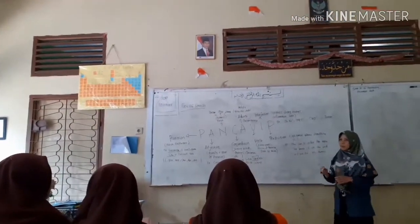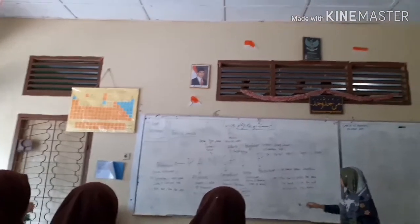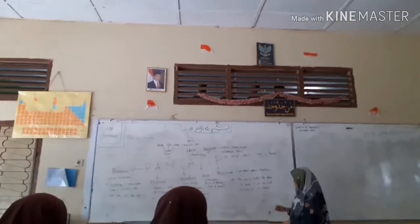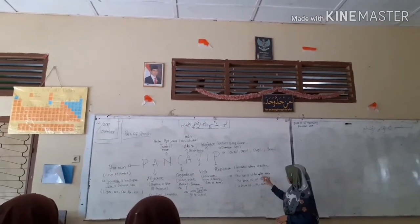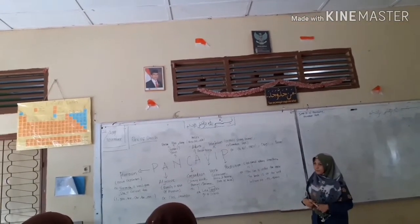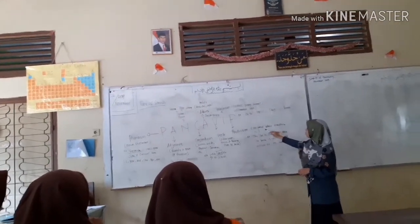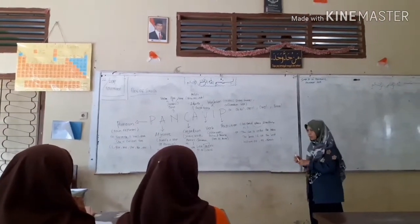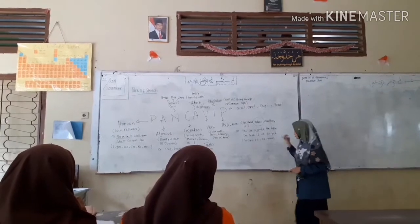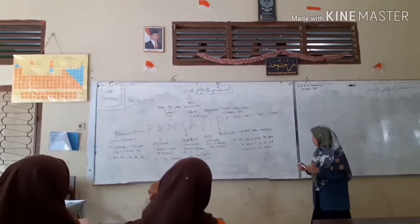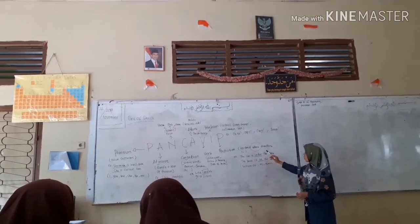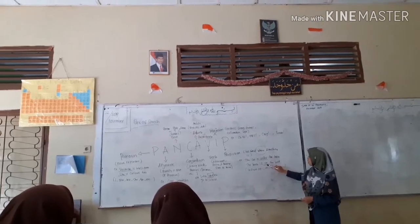Next, preposition. Preposition tells about where something is or where something happened. For example: 'The book is under the table.' Which one is the preposition? 'Under' — right. And the second example: 'The book is on...' — 'on'. Because 'under' and 'on' tell about where something is, where the book is.